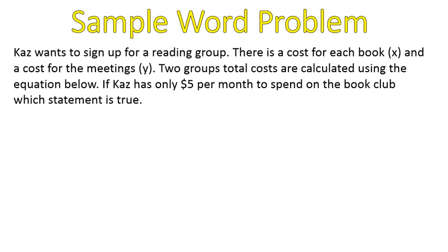Let me show you an example of a word problem. Kaz wants to sign up for a reading group. There was a cost for each book, x, and a cost for the meetings, y. Two groups, total costs are calculated using the equation. If Kaz has $5 per month to spend on the book club, which statement is true below? So here are the two equations. Club number one is 0.5x plus 1.5y equals 5, and club number two is 0.5x plus 1.5y equals 5. You've probably noticed that these equations are the same.